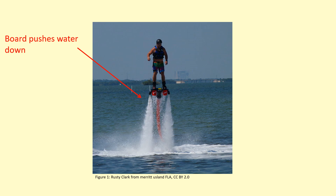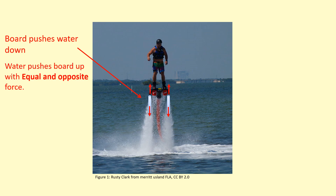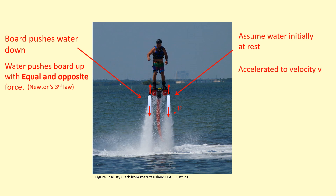The board is pushing water downwards — imagine a cylinder of water being pushed downwards. According to Newton's third law, this means there's going to be an equal and opposite force on the board upwards. Another way to think about it: if the water initially started at rest and got accelerated downwards to a velocity v, and the mass of water being pushed down each second is m, we can use the force equation to calculate the force applied to the water and therefore the equal and opposite force on the board.